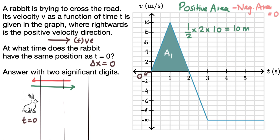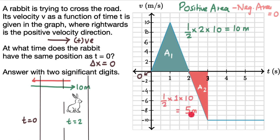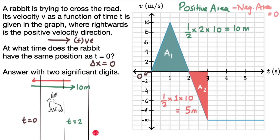So for the first two seconds, the rabbit has a positive displacement — it traveled 10 meters. At time t equal to 2 seconds, the displacement is 10 meters. Now the rabbit changed its mind and started to go back, because we see some negative area. Let's shade that — we see one triangle and some rectangle, a combination of two shapes. Focusing first on this triangle: its area is half times 1 (the base) times 10 (the height), so the area is 5 meters. When the rabbit started to go back, it traveled a distance of 5 meters, taking one second to do that.